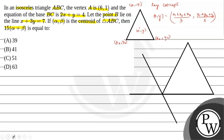Now let us use the key concept and solve the problem. In the question it is given that the coordinate of A is (6, 1). The equation of BC is 2x + y = 4, so this line is 2x + y = 4. Let the point B lie on the line x + 3y = 7, so let us take this line as x + 3y = 7.